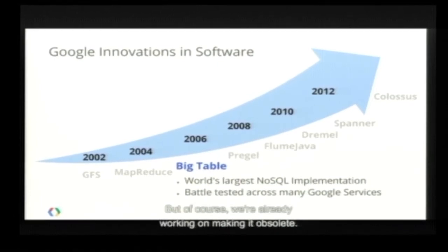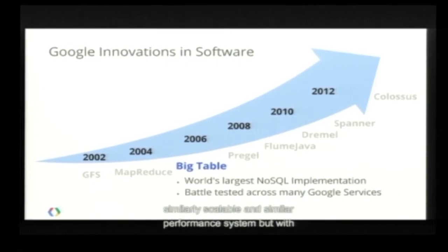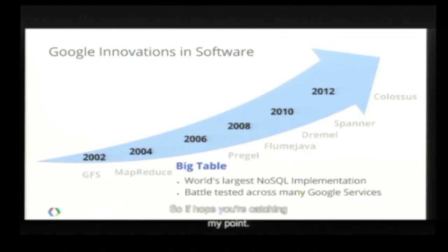Of course we're already working on making it obsolete. Last year we talked about Spanner, which gives you a similarly scalable and high-performance system but with transactional consistency.